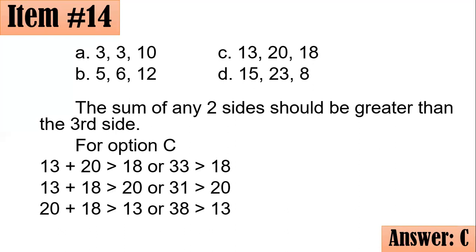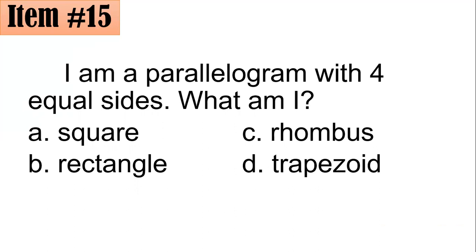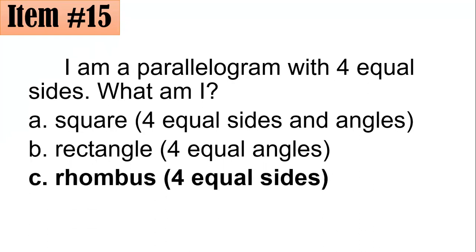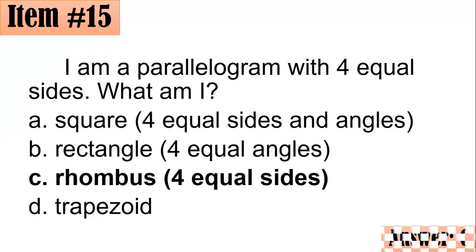Number 15. I am a parallelogram with four equal sides. What am I? A square, rectangle, rhombus, or trapezoid? Trapezoid is out because a trapezoid is not a parallelogram — a parallelogram needs two pairs of parallel sides, but a trapezoid has only one pair. A square has four equal sides and four equal angles. A rectangle has four equal angles. A rhombus has four equal sides, and that's the answer. The correct answer is letter C, rhombus.